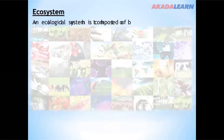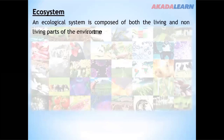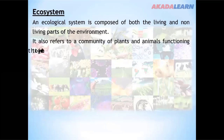What is an ecosystem? An ecological system is composed of both the living and non-living parts of the environment. It also refers to a community of plants and animals functioning together with their non-living environment.